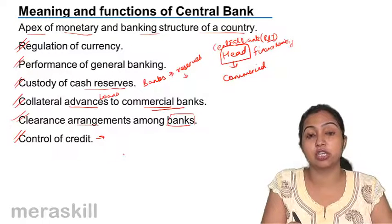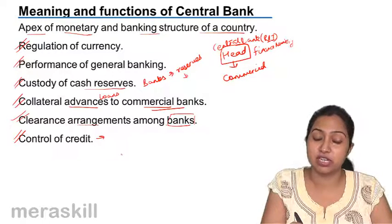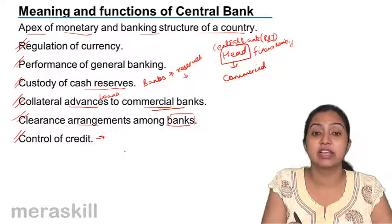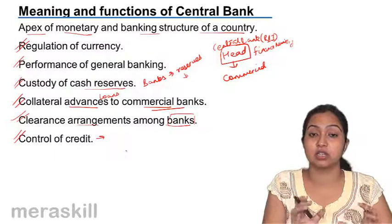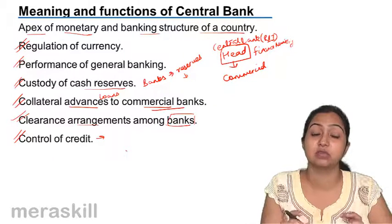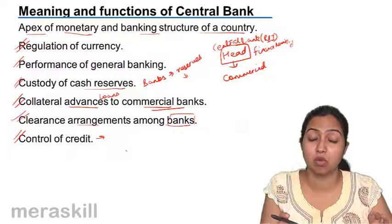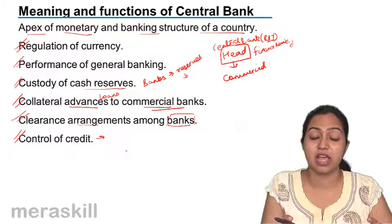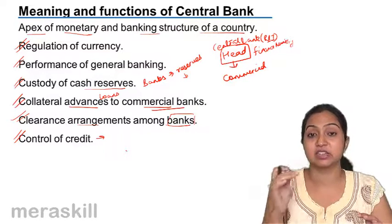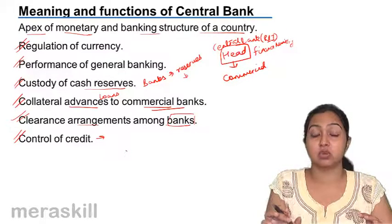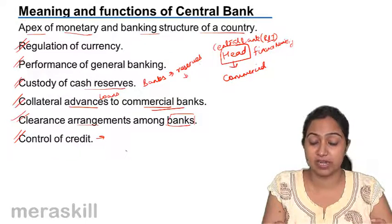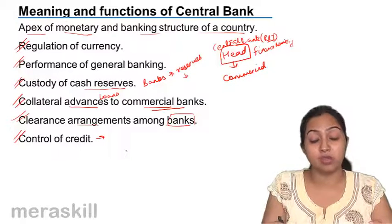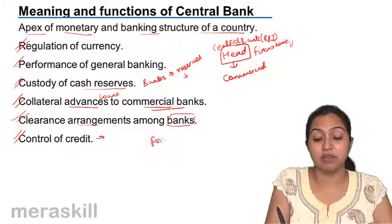Most importantly, the RBI controls credit during inflationary or deflationary conditions. If there is inflation, it controls credit. If there is deflation, it puts more credit in the hands of the banks, which in turn leads to more money in the hands of the public.